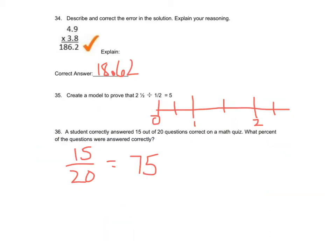Let's take a look at 34. The numbers are correct: 1, 8, 6, 2. But we see right away there are 2 numbers behind the decimal point, so there should be 2 numbers behind the decimal in the answer, and there's not. So the correct answer is 18.62.